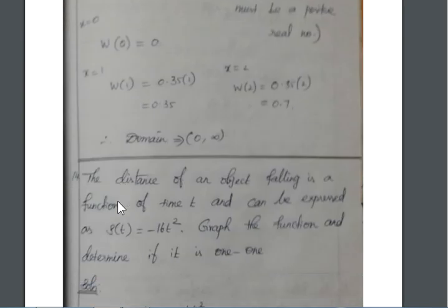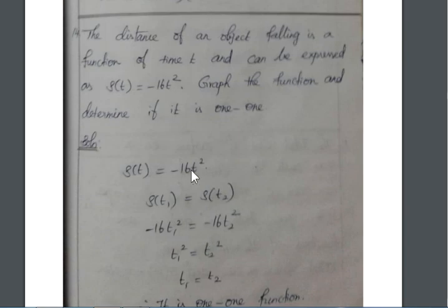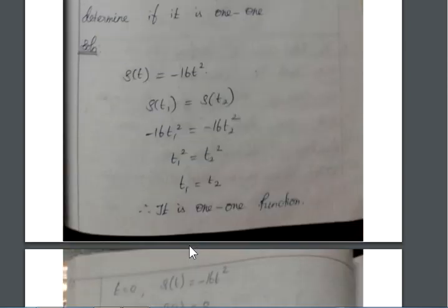Then, the distance of an object falling is a function of time t. Here, the distance is given. s(t) is equal to minus 16t square. Graph the function and determine if it is 1-to-1. s(t) is equal to minus 16t square is given. Already, you know 1-to-1 means s(t1) is equal to s(t2). We take means we find out the answer t1 is equal to t2. So, minus 16t1 square is equal to minus 16t2 square. 16, 16 cancel. t1 square is equal to t2 square. Taking square root on both sides, we get down the answer t1 equal to t2. That is the 1-to-1 condition.